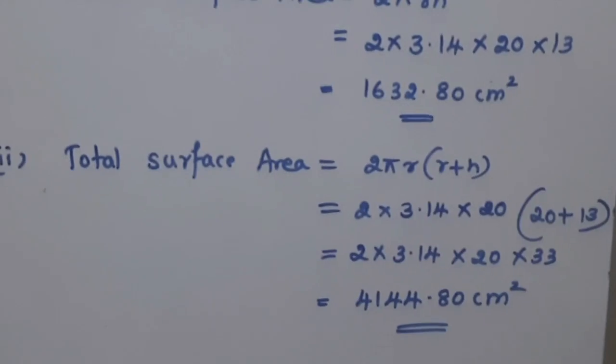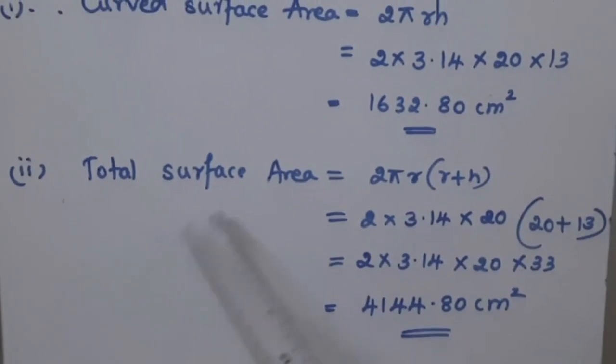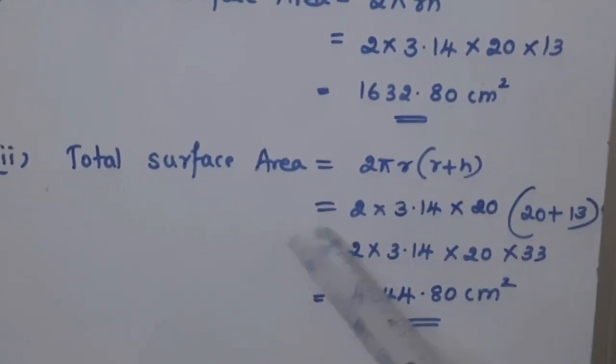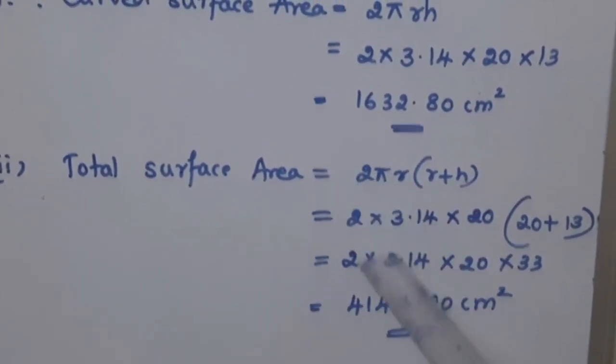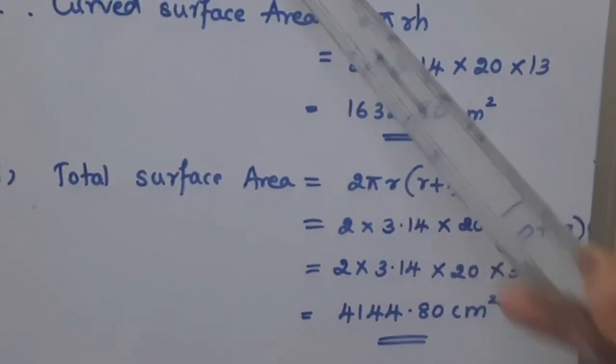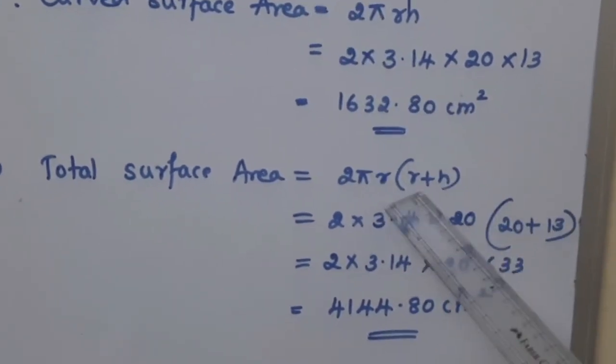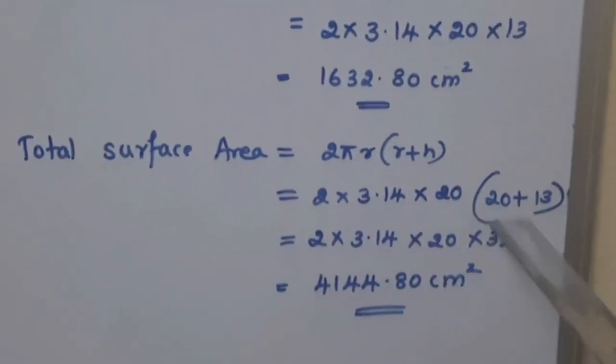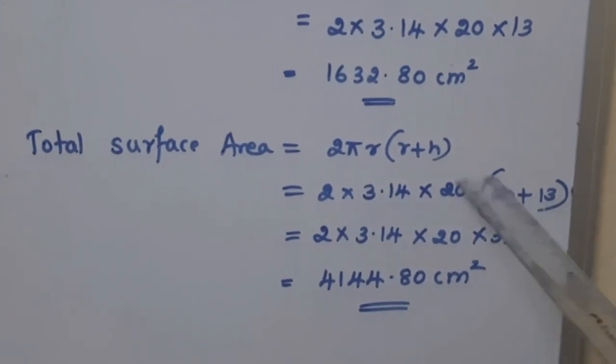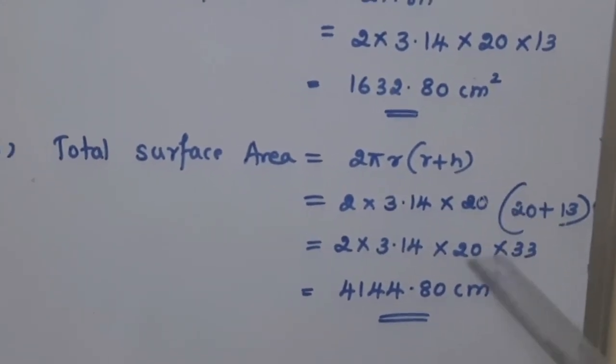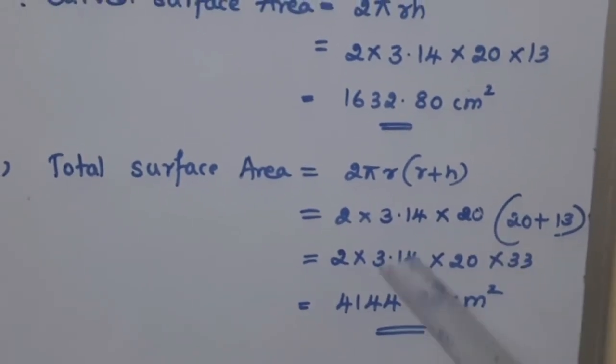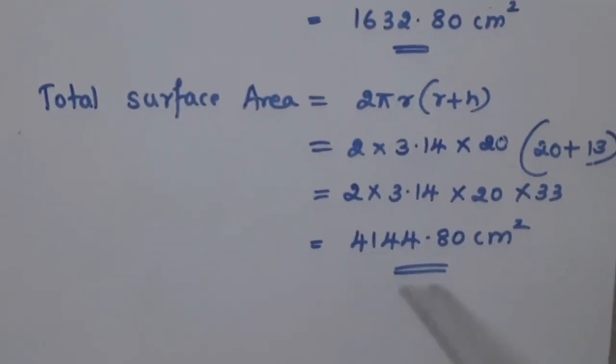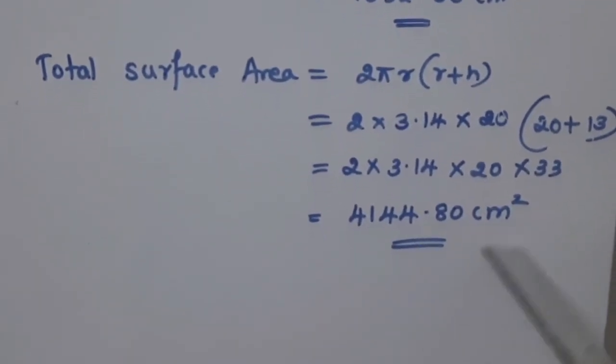In the same way, we will find total surface area of that cylinder, which is equal to 2πR bracket R plus H, which is equal to 2 multiplied by π is 3.14 multiplied by R is 20, bracket R is 20 plus H is 13. 20 plus 13 is 33, so here it is multiplied, into 33. All the 4 if you multiply we get 4144.80 cm square.